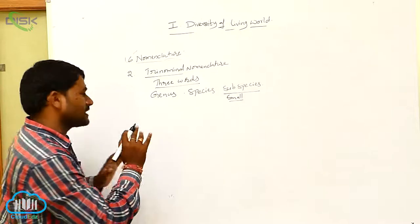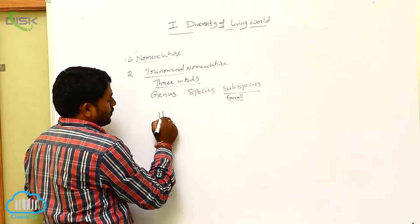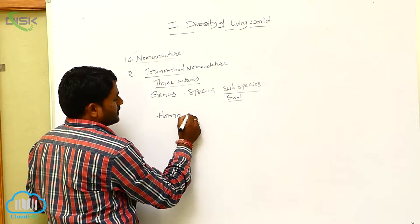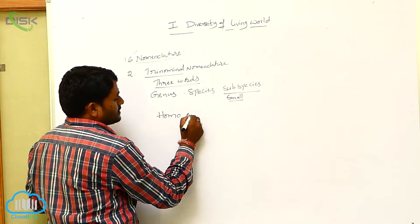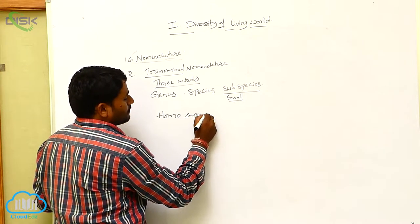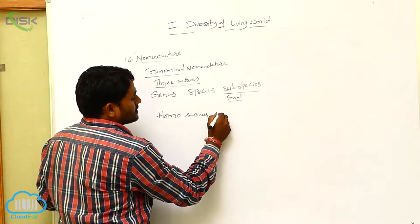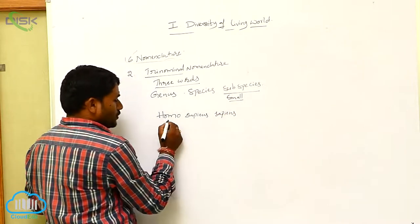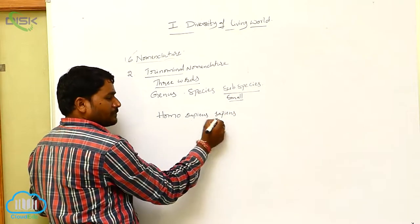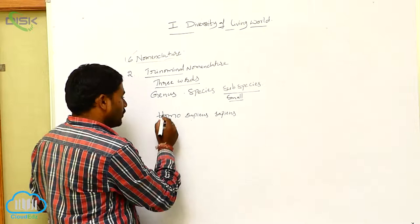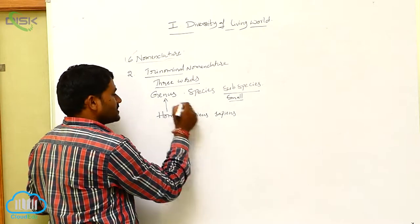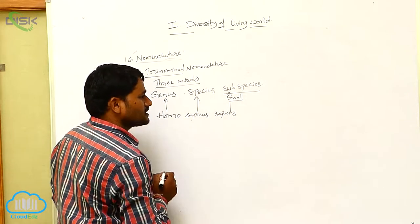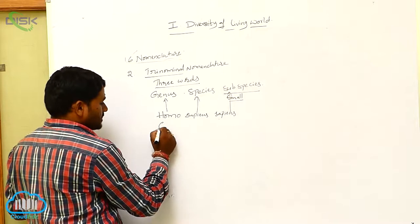Let us see some examples. Homo is the genus, sapiens is the species, and sapiens is the subspecies. So Homo sapiens sapiens is the scientific name of man.